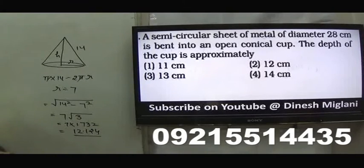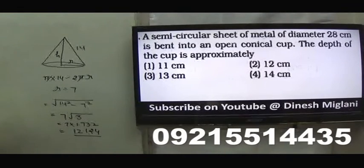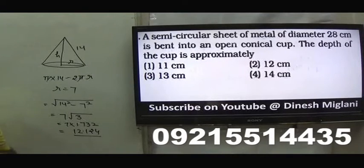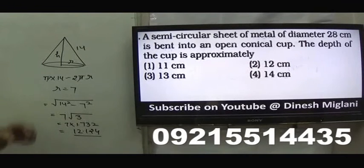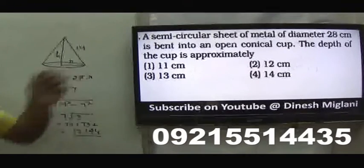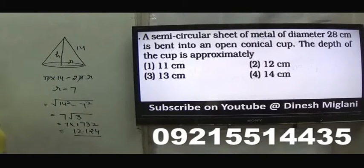This question involves converting a semicircle into a cone. For better understanding of these concepts, you may watch my sessions on my YouTube channel covering the basics of three-dimensional geometry. The answer is approximately 12 centimetres.